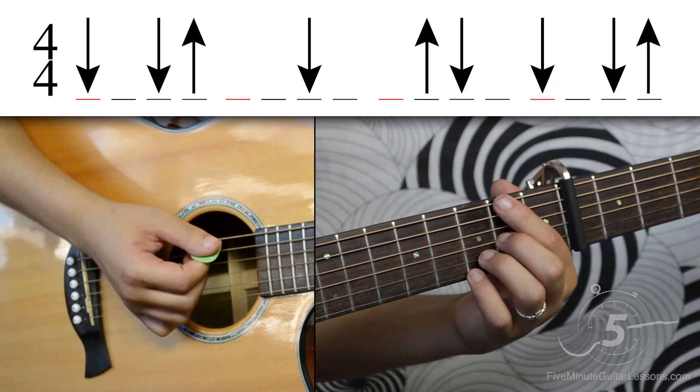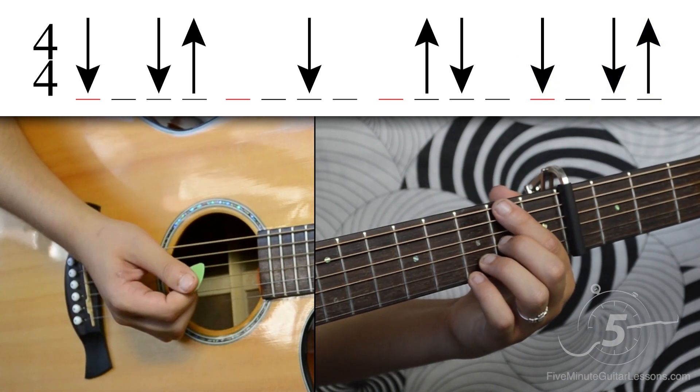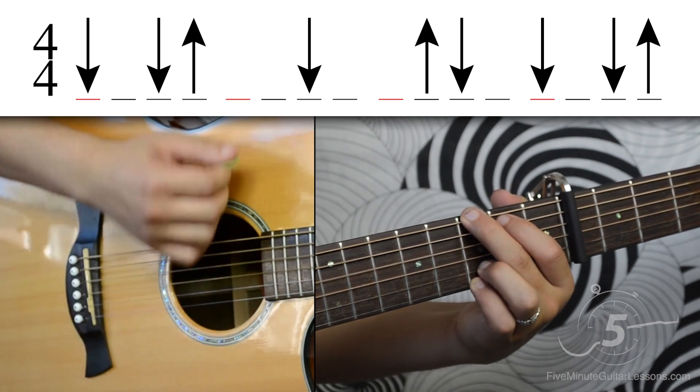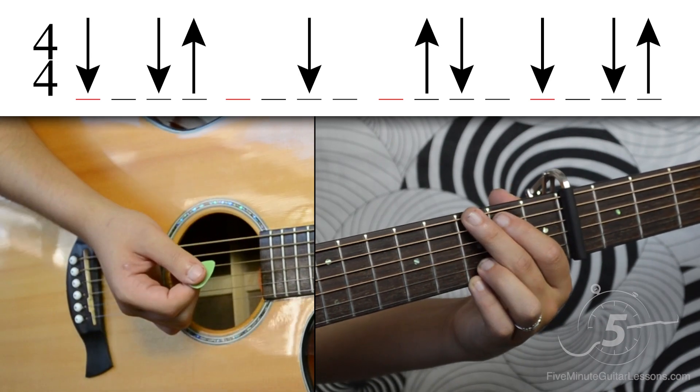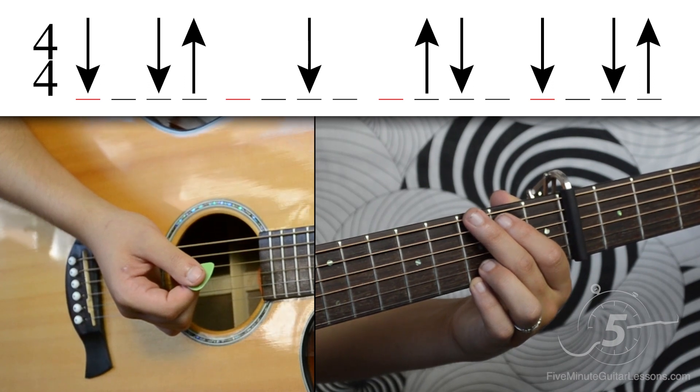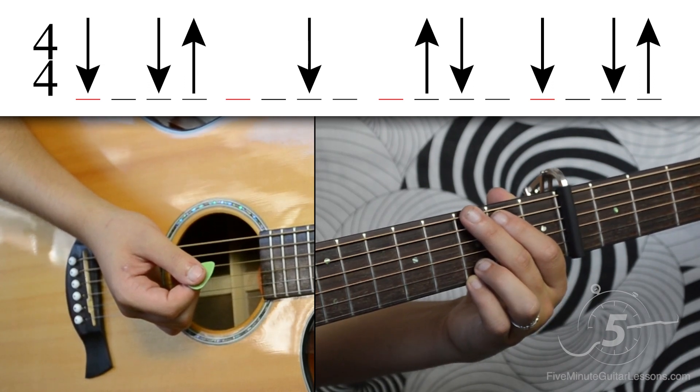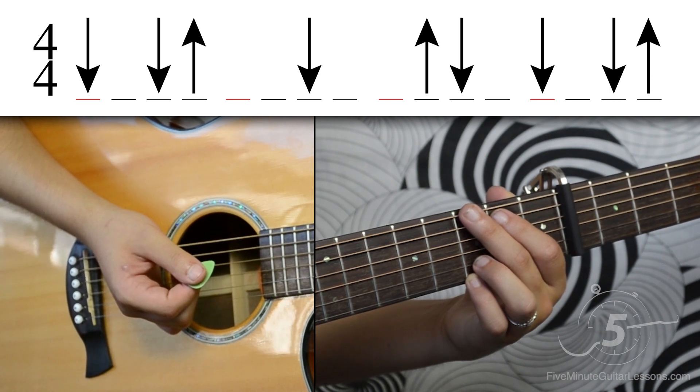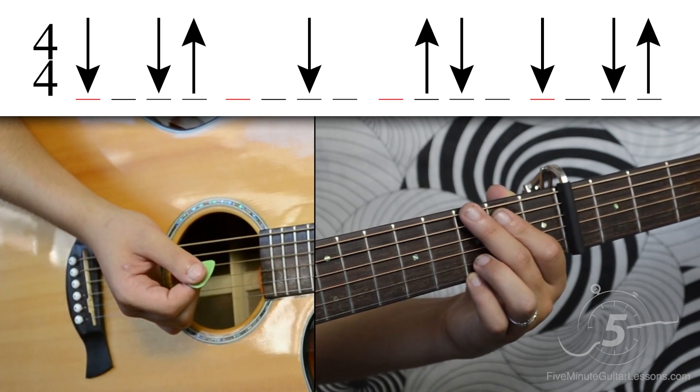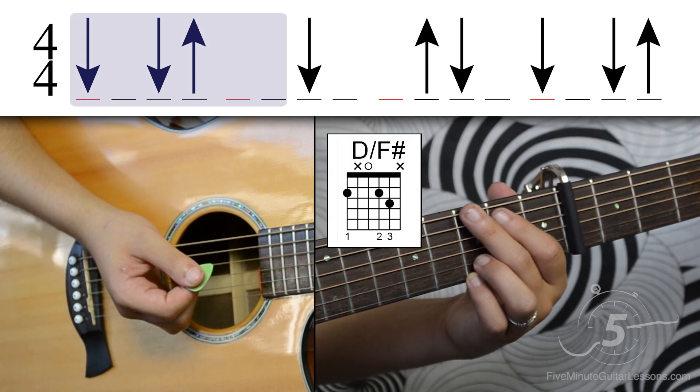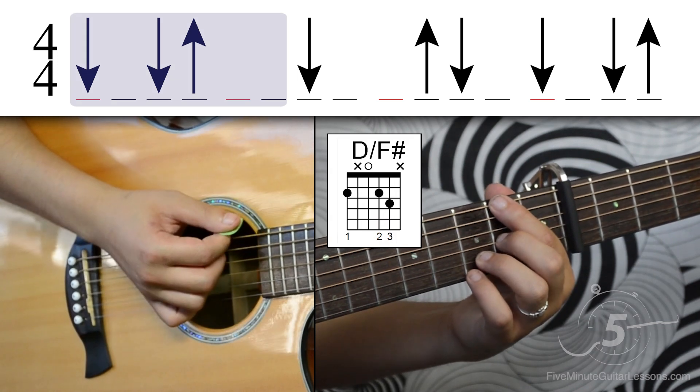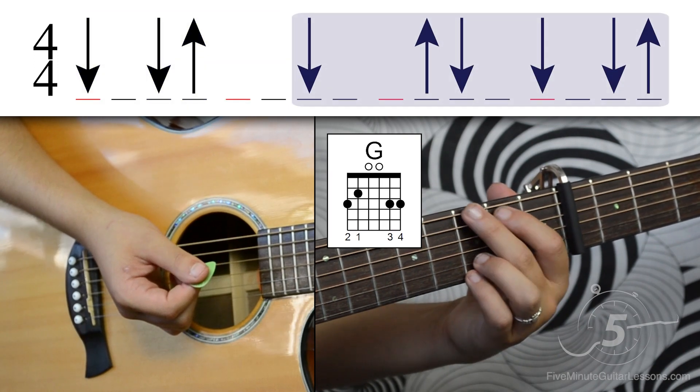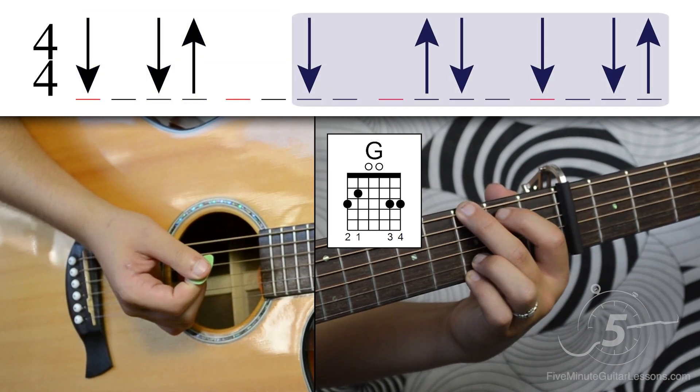All together we get down, down, up, down, up, down, down, down, up. And you might have noticed there that we changed chords during the strumming pattern. That's because the strumming pattern takes up the space of two chords. So we can pair off the chords and the first chord would go down, down, up. And then the chord right after it would go down, up, down, down, down, down, up.